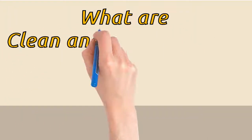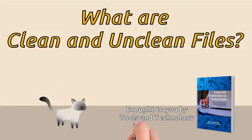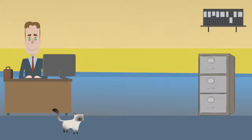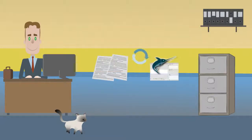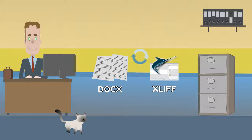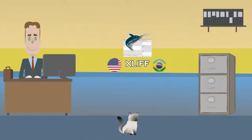What are clean and unclean files? Brought to you by Tools and Technology in Translation. When you're working with a CAT tool, you must convert the original file into the format used by the software. For example, if you have a Word document, you'd need to convert it into a bilingual format that will contain the sentences written in the original language, which you translate into your language. This bilingual format containing both source and target segments is considered an unclean file.